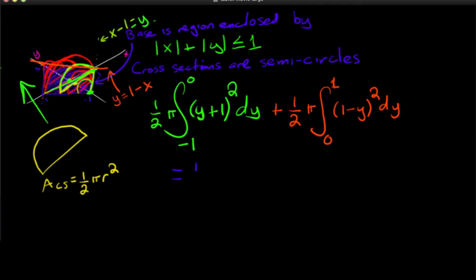But at the end of the day, what you'll end up getting is this is pi over 2 times, from this one, you're going to get 1 third. And then from this one, you're also going to get 1 third. And so this is simply equal to pi over 3.